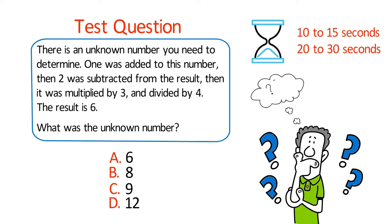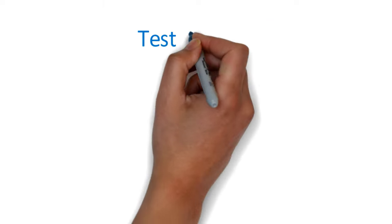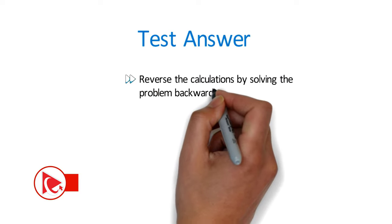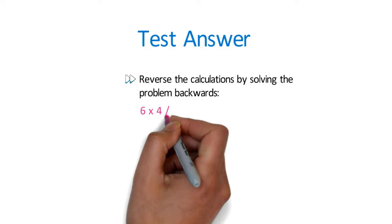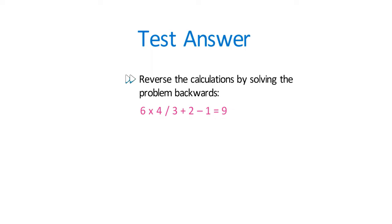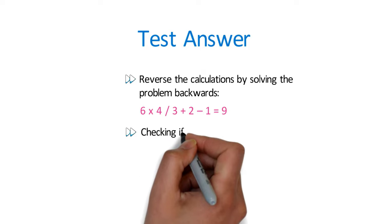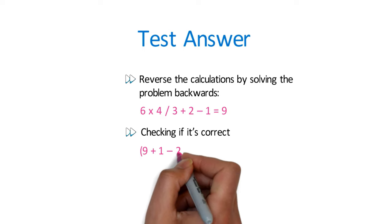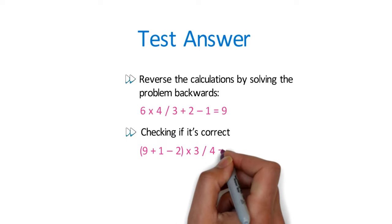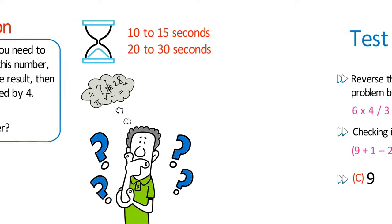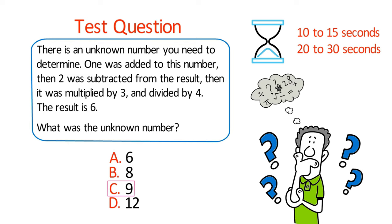The best approach is to reverse the calculation: multiply 6 by 4, divide by 3, add 2, subtract 1 — the result is 9. Let's verify: (9+1−2) × 3 ÷ 4 = 6. Correct! The answer is choice C: 9.